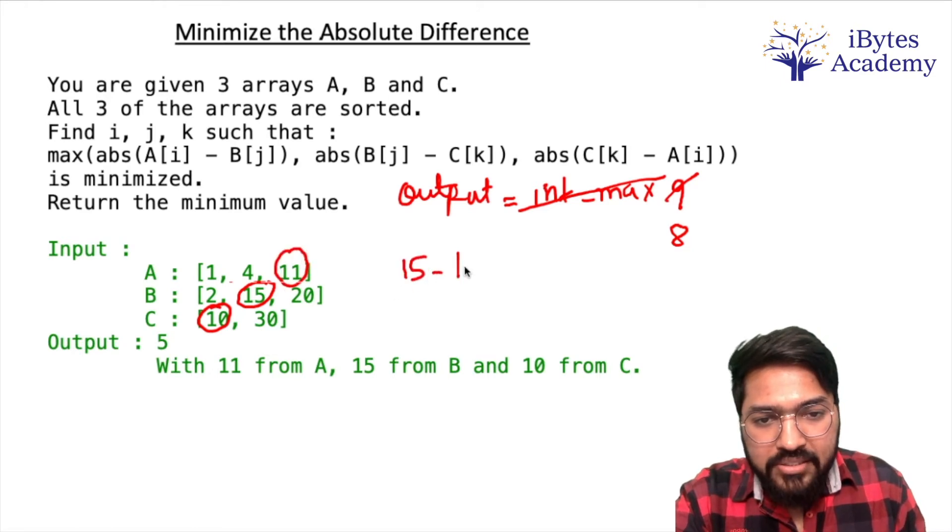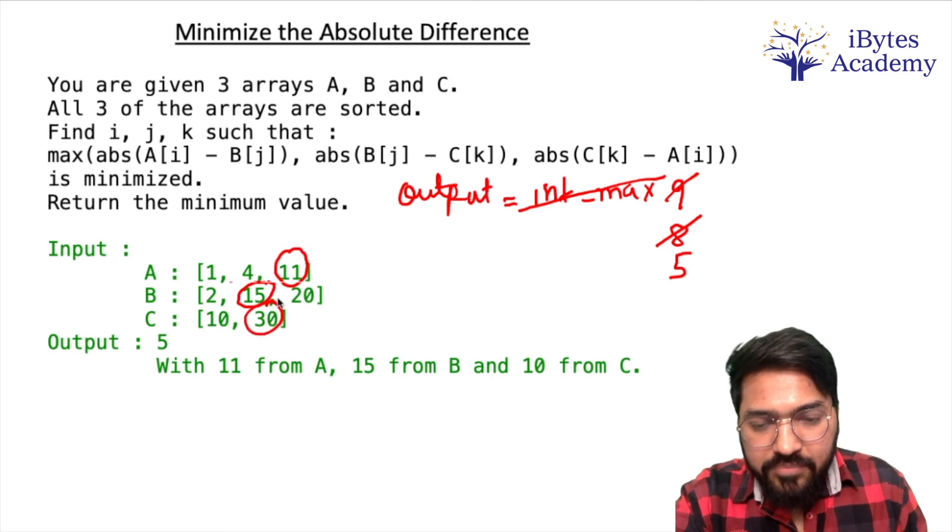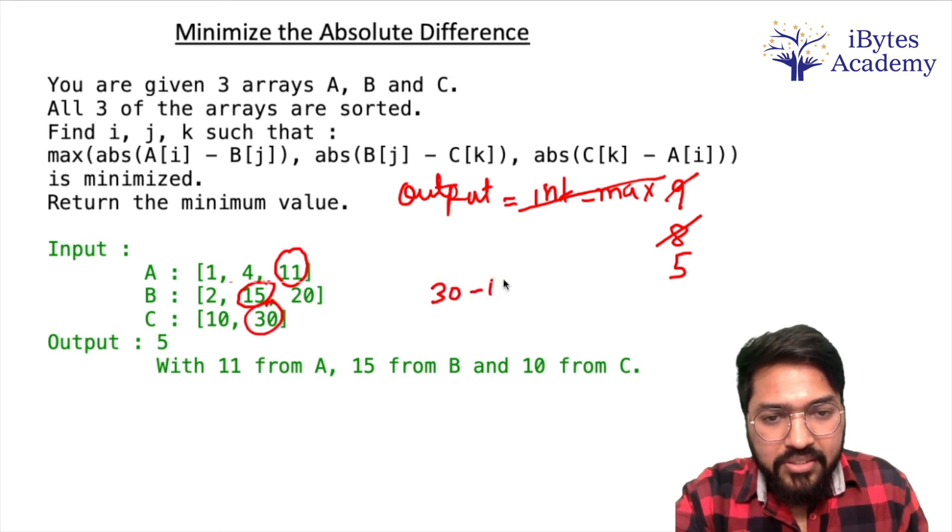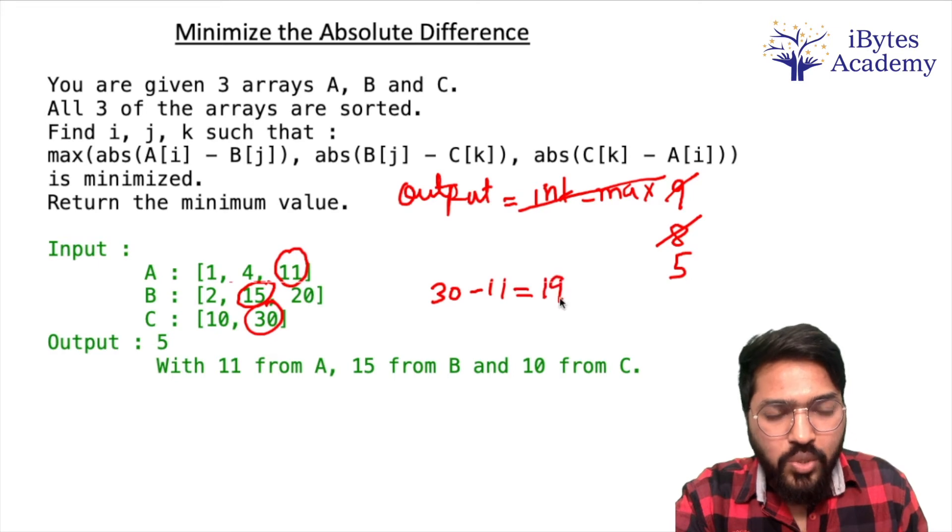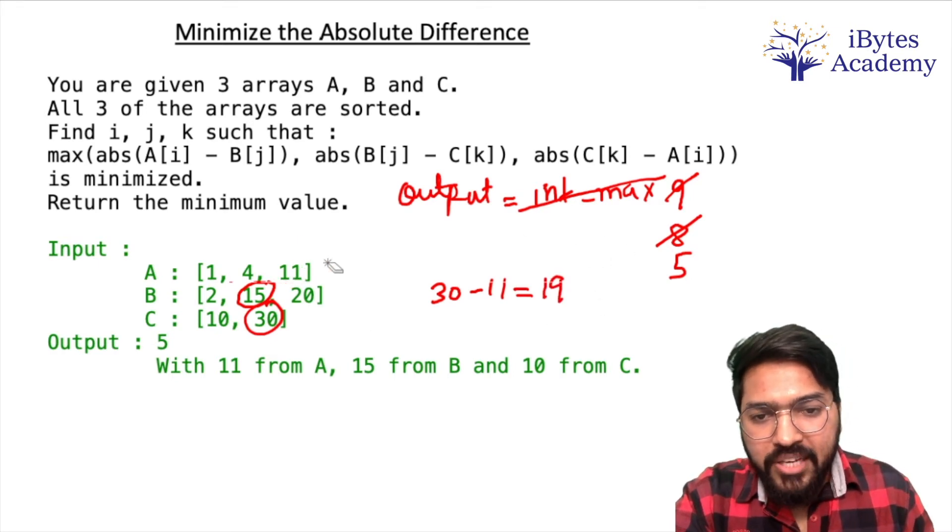Now 15 minus 10 is going to give me 5. So I will update this to 5. Then we will move this ahead. So 30 minus 11 is giving me 19, so I will not update my output.